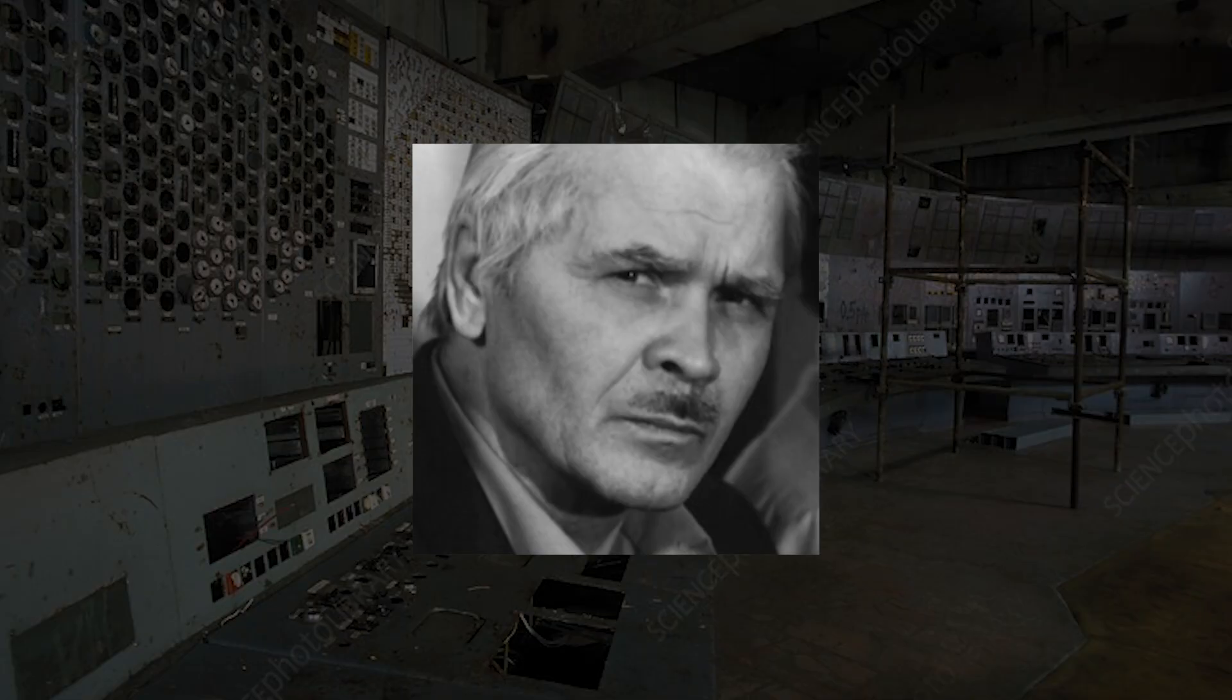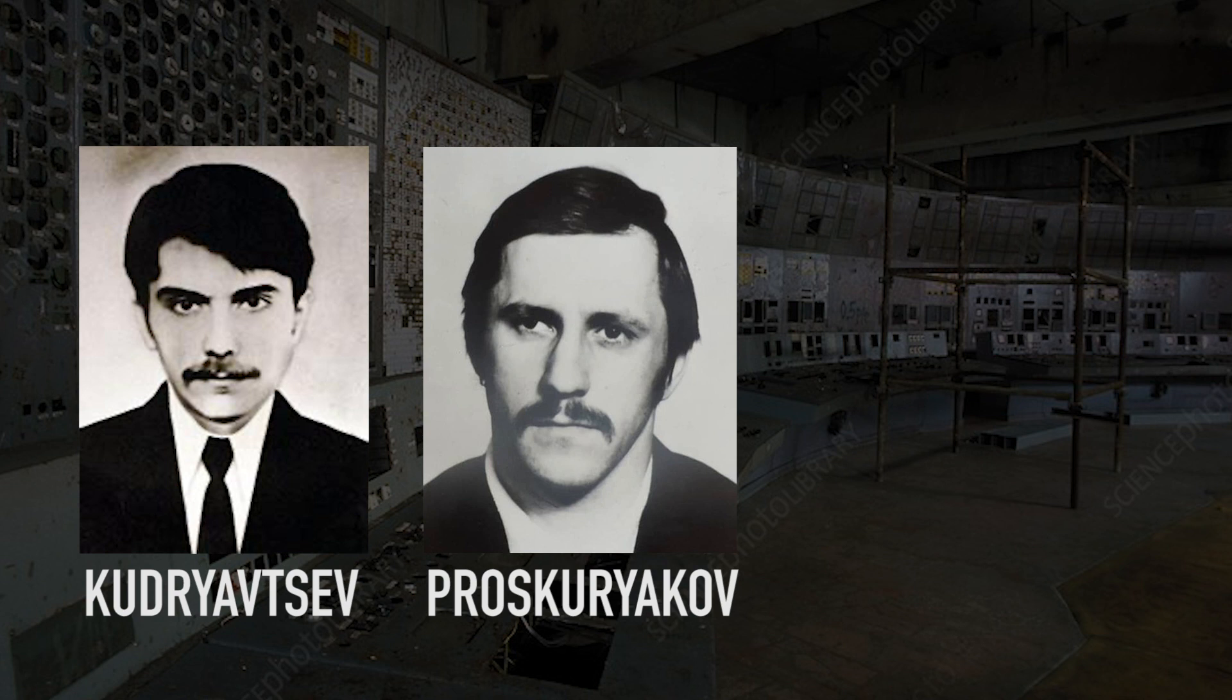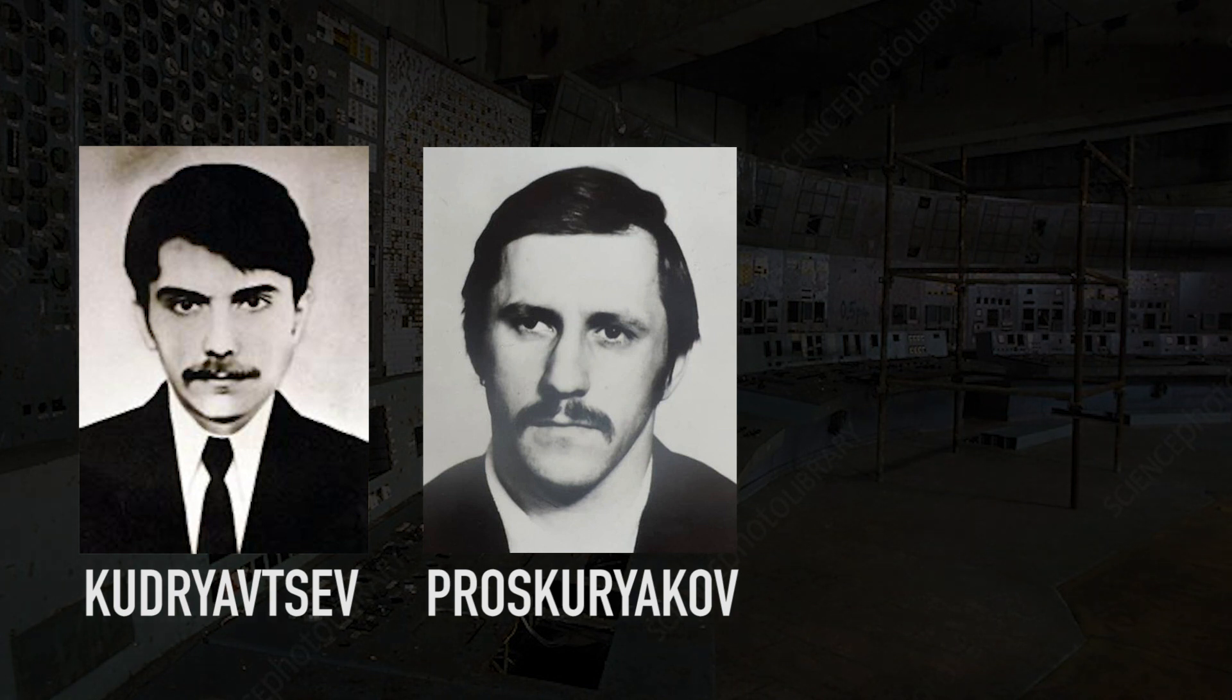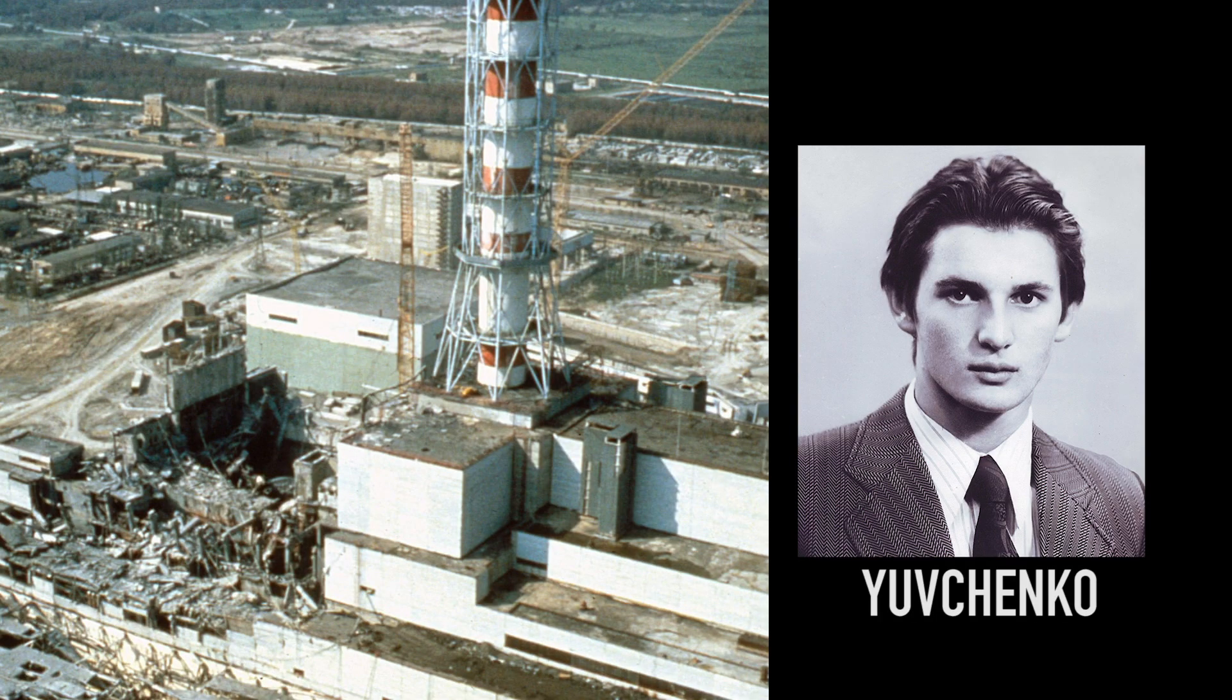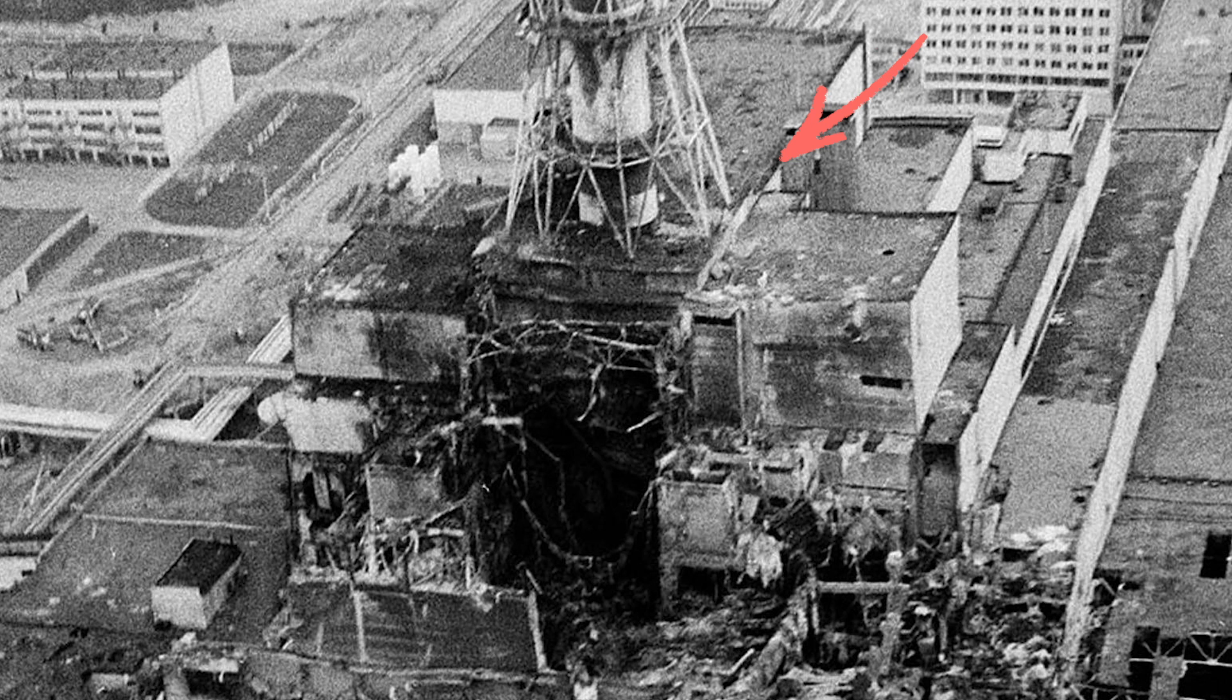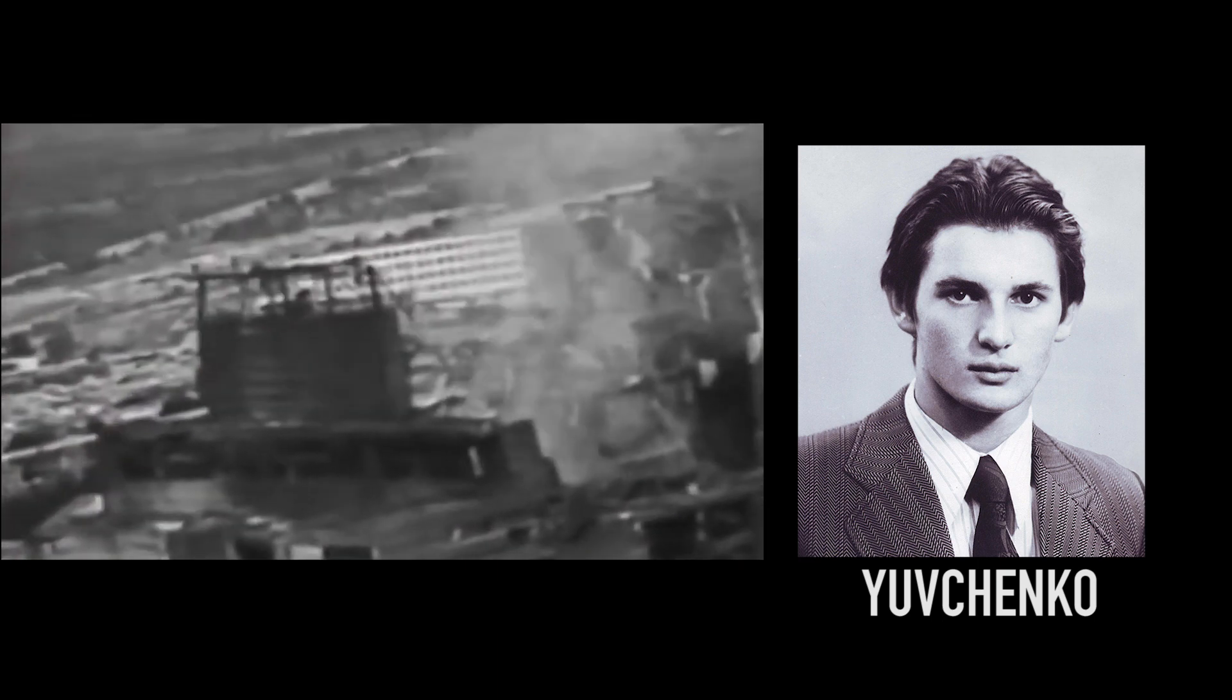Meanwhile Dyatlov sends two junior technicians, Alexander Kudryavtsev and Viktor Proskuryakov, to the reactor to manually lower the presumably seized control rods. In reality, the reactor and the control rods have been destroyed. As the two make their way towards the reactor, they run into Alexander Yuvchenko. At the time of the blast, Alexander Yuvchenko was in his office between reactors 3 and 4. After the explosion, he checked on the damage and was horrified to see a major chunk of the building missing.